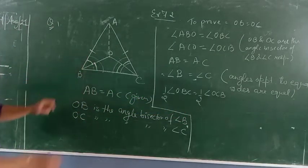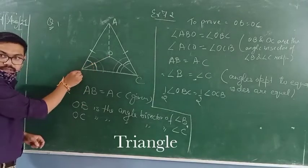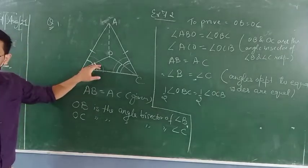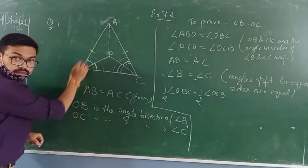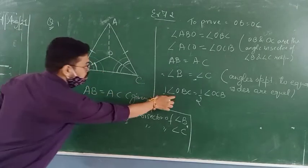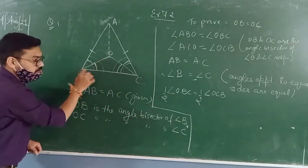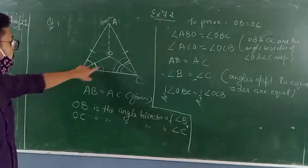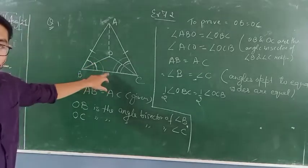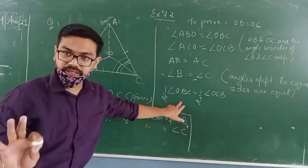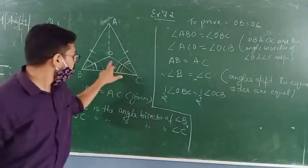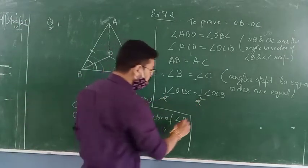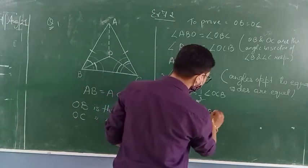This is the complete angle B, and OB is the angle bisector, so obviously these two angles are equal. The complete angle B is divided between these two equal angles, so OBC equals half of angle B. Similarly, OCB equals half of angle C.